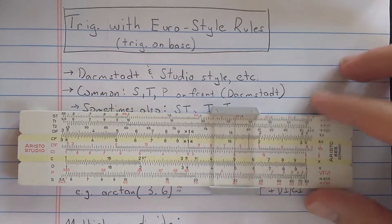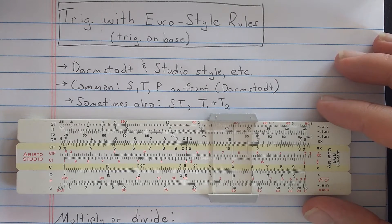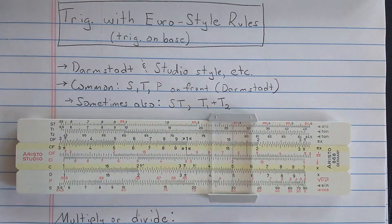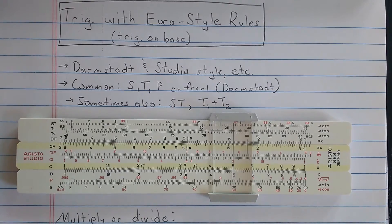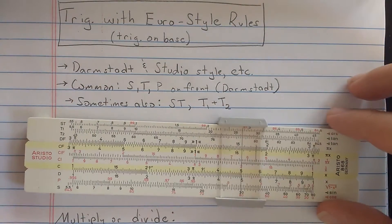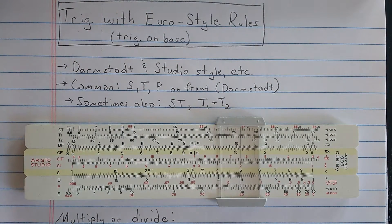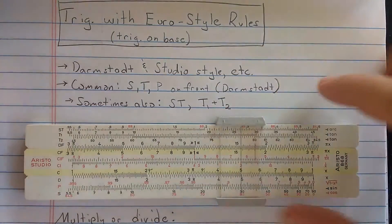Luckily that doesn't make too much of a difference, but we're going to go through it. You can find trigonometry on the base like this on Darmstadt-style slide rules which have usually at least S, T, and P, which you can think of as related to trigonometry. Of course, I have a separate video on the P scale. These all appear on the front of the Darmstadt.